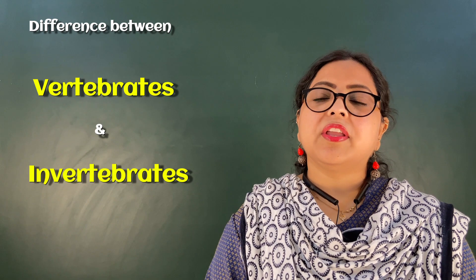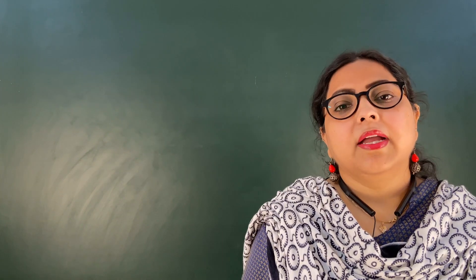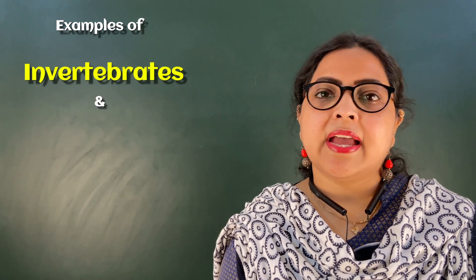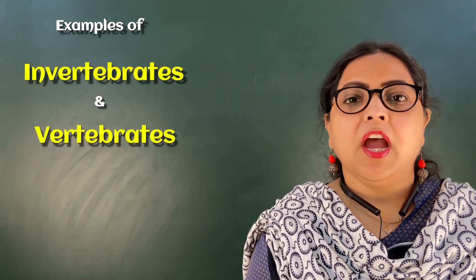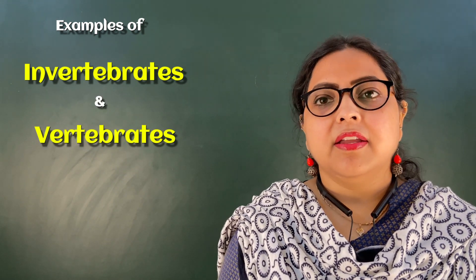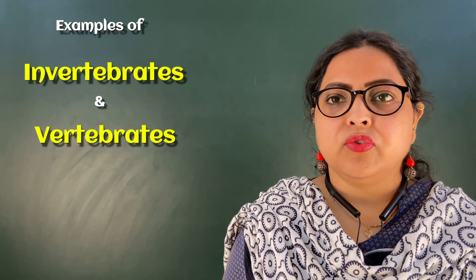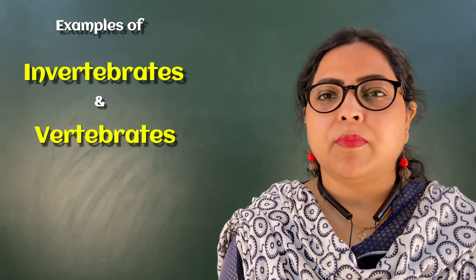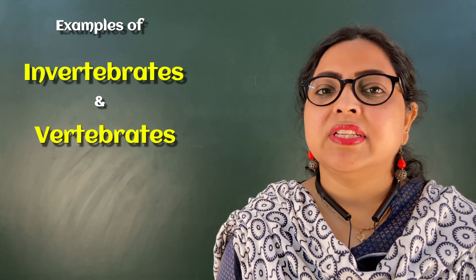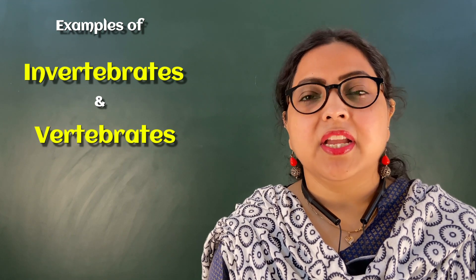So these were the main differences between vertebrates and invertebrates. Now we will see examples of each. For invertebrates, there are eight phyla that will come in the exam, and all members of these eight phyla are examples of invertebrates.